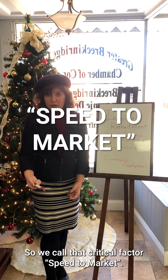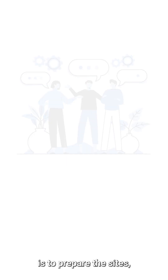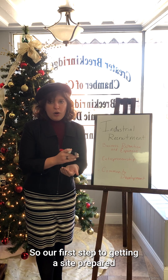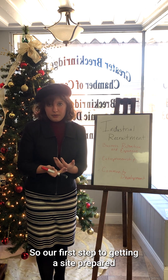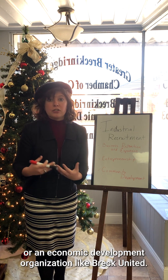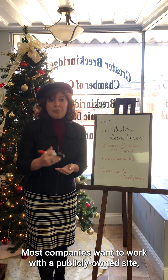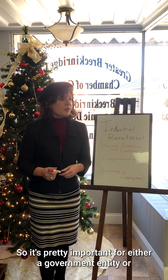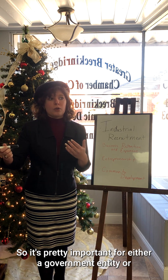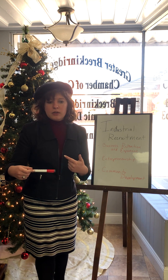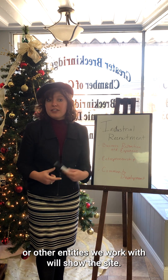We call that critical factor speed to market. Our role as an economic development organization is to prepare the sites and then market them to prospective companies. In order to have a site that can offer that speed to market, the first step is for the site to actually be owned by a public entity — either the government or an economic development organization like Brook United. Most companies want to work with a publicly owned site because that offers them more security in their investment than working with a privately owned site. So it's pretty important for either a government entity or a quasi-government entity to own or have some sort of option on the property before the cabinet or other entities we work with will show the site.